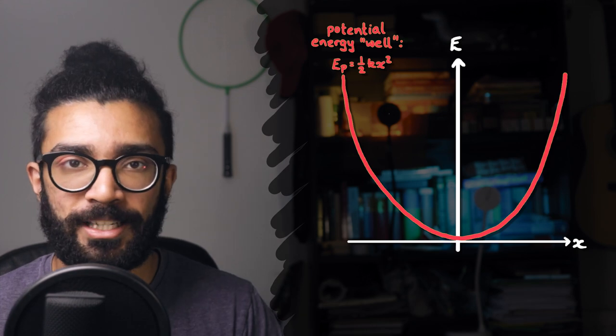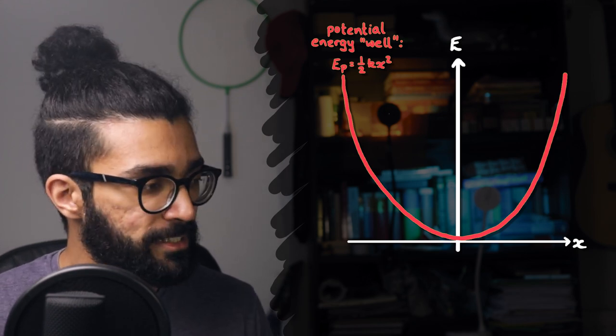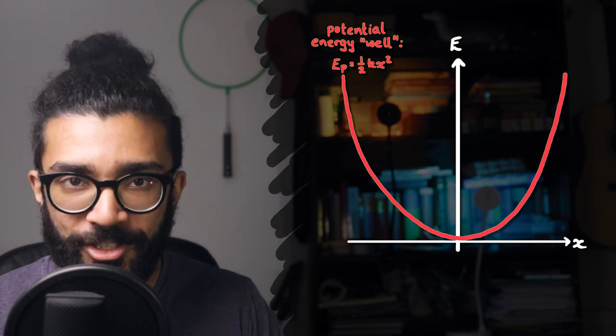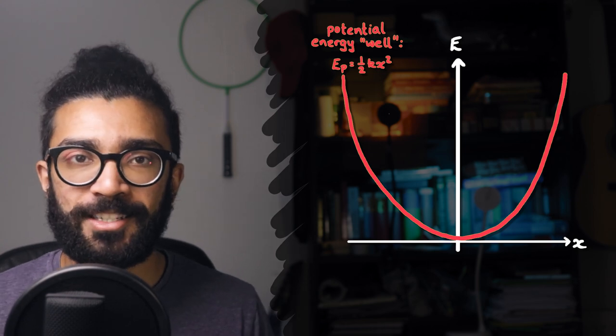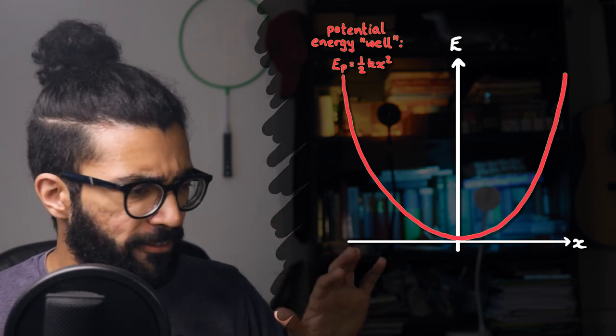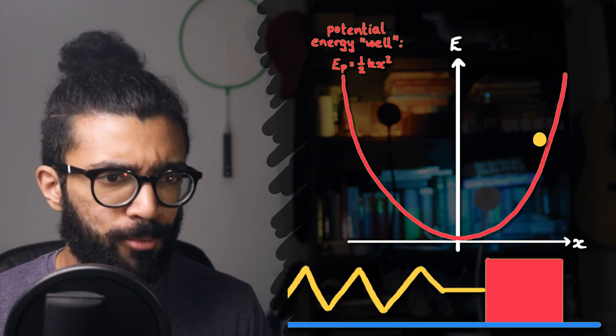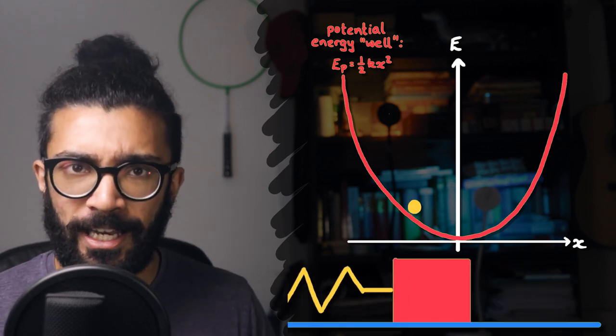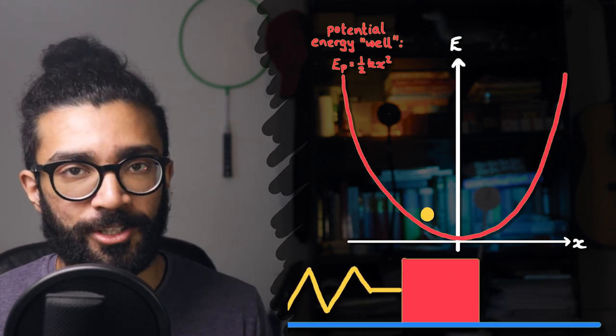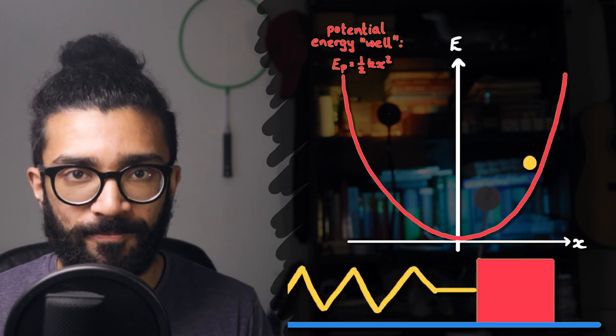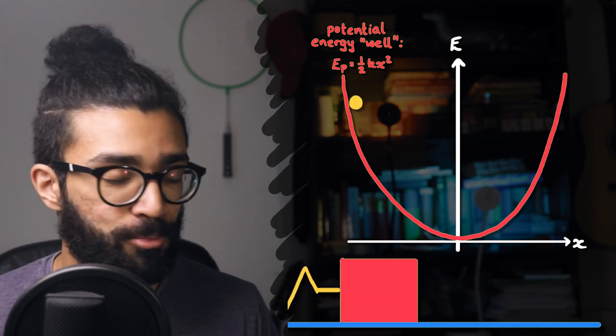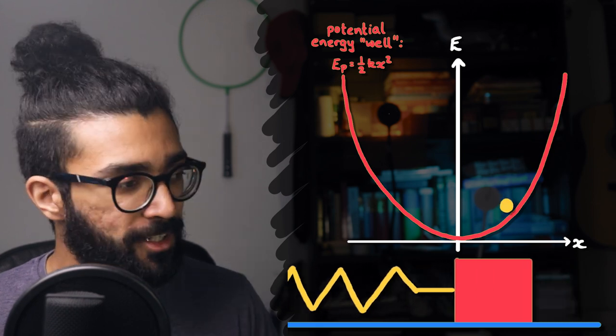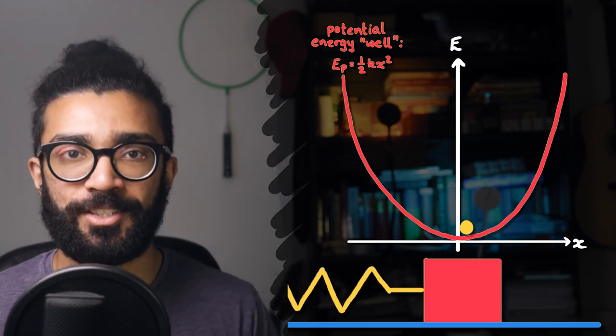We can make a plot of the potential energy stored in the spring, which for classical physics can serve as a really good analogy. We can imagine that this potential energy well is almost like a valley, and we can imagine a ball moving up and down the sides of this valley, corresponding to the simple harmonic motion of the mass spring system. As the potential energy stored in the spring changes throughout the oscillation, so the ball moves up and down the potential energy slope.